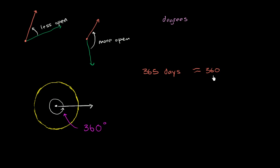360 is also a much neater number than 365. It has many more factors — it's divisible by a bunch of things. But this has just been the convention that history has handed us: a circle is viewed to have 360 degrees.